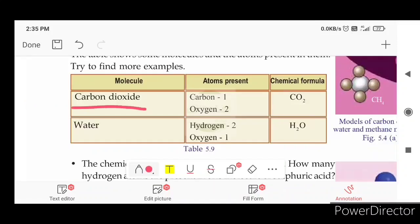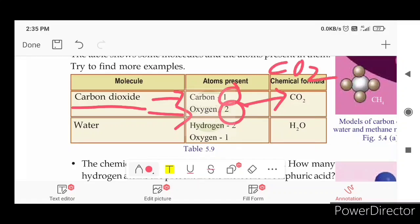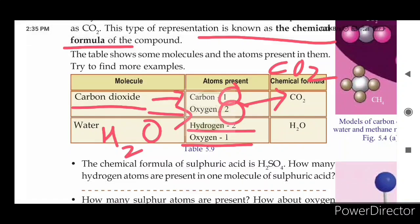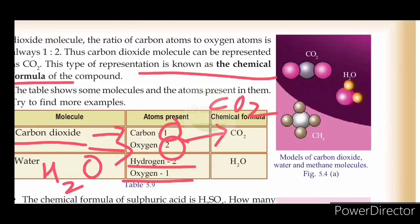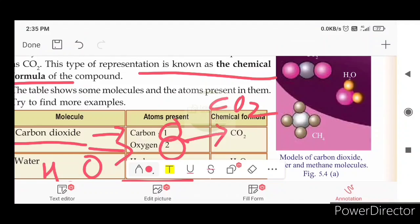Carbon dioxide is CO2 — 2 atoms are oxygen. 1 carbon and 2 oxygen. H2O is H2O. The models of carbon dioxide and methane molecules: CO2, H2O is hydrogen.